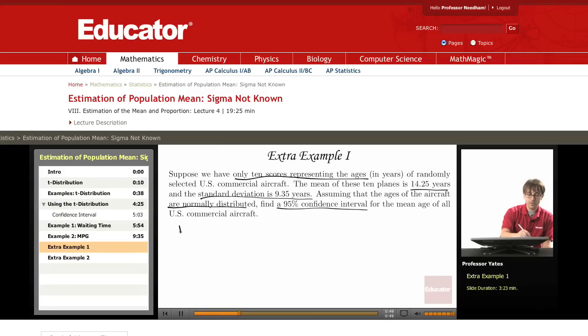So the first thing we're told is that N equals 10. From that, I could get my degrees of freedom, which are going to be 9. From that sample of 10, my mean is 14.25, so that means X-bar is 14.25. And the standard deviation for those 10 observations is going to be 9.35.